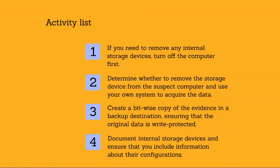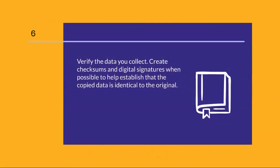Document internal storage devices and include information about their configurations — for example, the manufacturer and model, jumper settings, the size of the device, the type of interface, and the condition of the drive. Verify the data you collected by creating checksums and digital signatures when possible to help establish that the copied data is identical to the original. In certain circumstances, such as when a bad sector exists on the storage media, it may be impossible to create a perfect copy. Ensure that you have obtained the best copy possible with the available tools and resources.